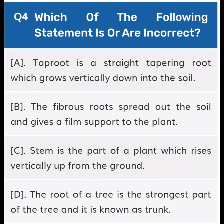Next, question number four: Which of the following statements is or are correct? Option A: Tap root is a straight tapering root which grows vertically down into the soil. Option B: The fibrous roots spread out in the soil and give firm support to the plant. Option C: Stem is the part of a plant which rises vertically up from the ground. Option D: The root of a tree is the strongest part of the tree and it is known as trunk.